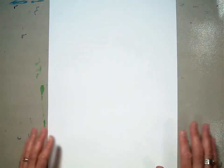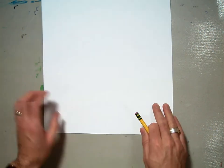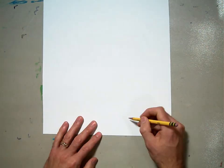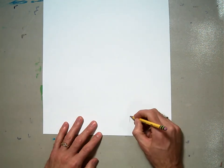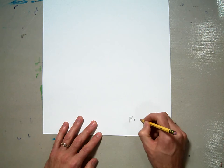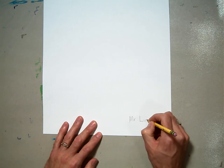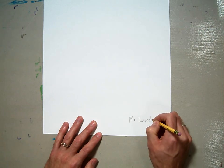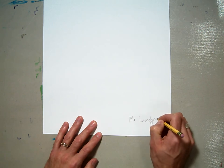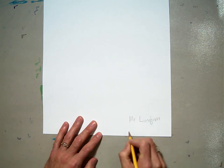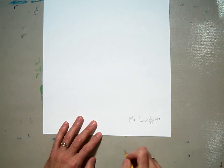Here's our paper. First things first, you're going to write your name on the bottom. Mine's Mr. Lundgren, so I'm going to write Mr. Lundgren. And you will write your name there instead of mine.